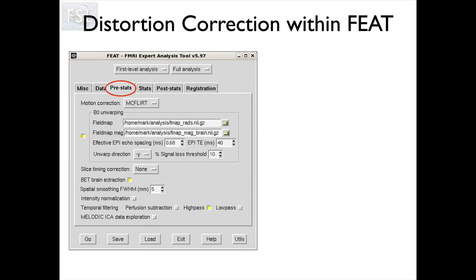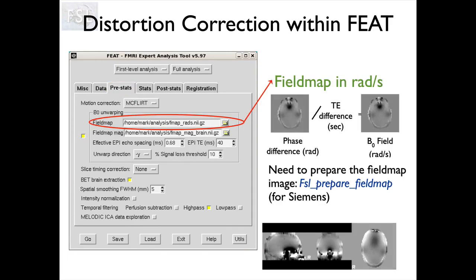Setting this up in the FEAT GUI is done in the pre-stats tab rather than the registration tab, because it happens early in the pipeline, and it's called B0 unwarping. You need to provide the field map in units of radians per second, which is normally easy to get from your sequence — there's a script available for Siemens imaging and a wiki page for other scanners. If you have the field map in Hertz, the conversion to radians per second is simply multiplying by a number. Otherwise you may need to calculate the phase image difference yourself and convert it to radians per second.